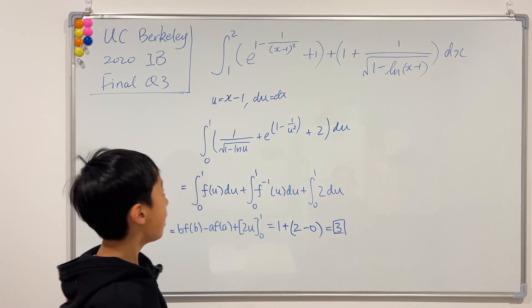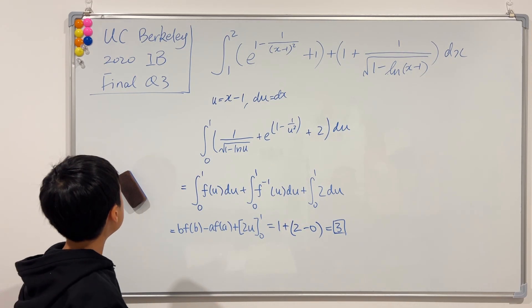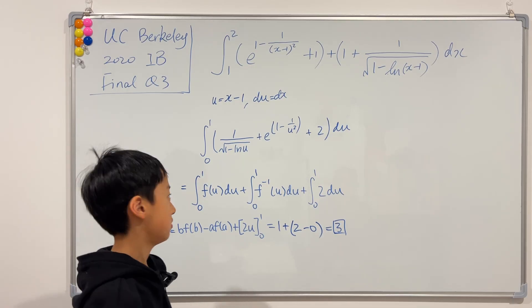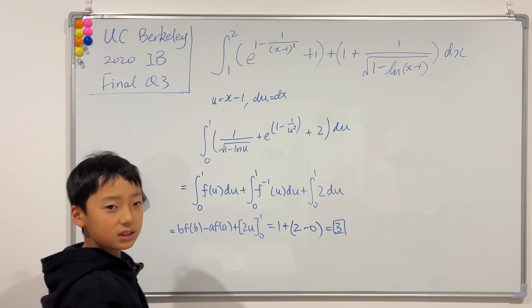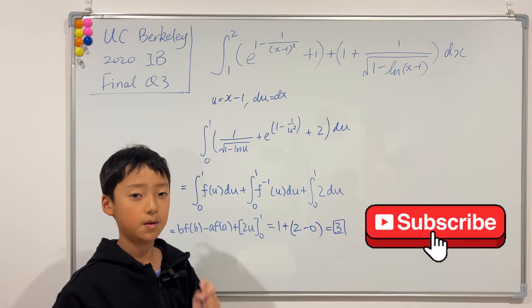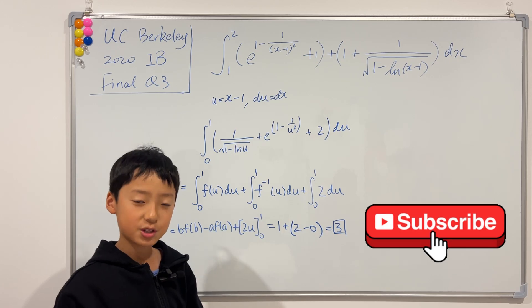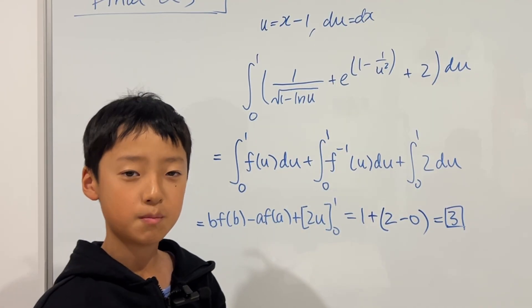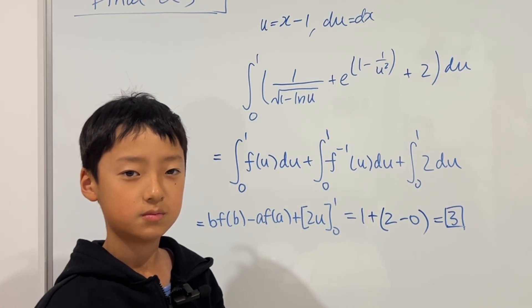So 3 is the final answer of this UC Berkeley Integration B final question. So thank you guys so much for watching, and if you want more integration questions like this and you enjoy my video, please consider liking and subscribing.